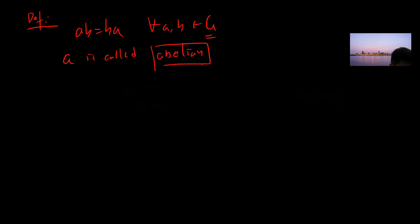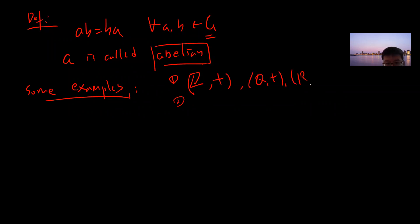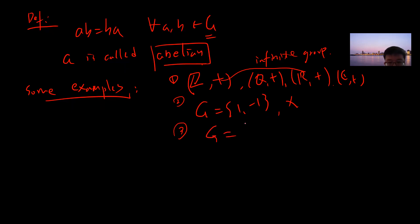Let's talk about some examples. Group theory is very easy — everyone should feel comfortable. The integers under addition form a group, and similarly the rationals, real numbers, and complex numbers under addition are all infinite groups. A simple example is Z2: the set {−1, 1} under multiplication is a group.